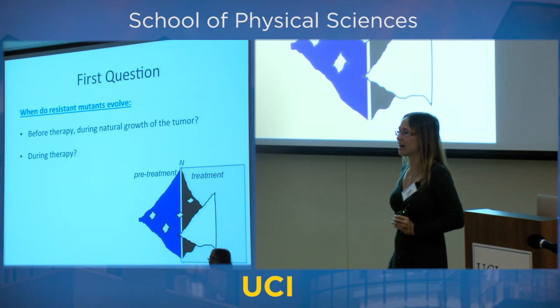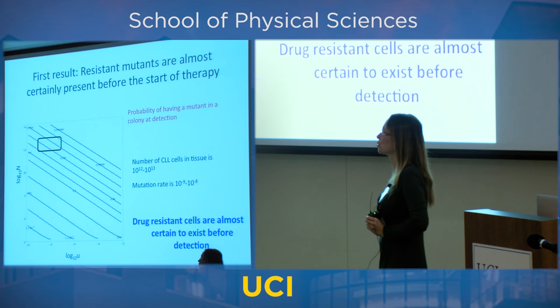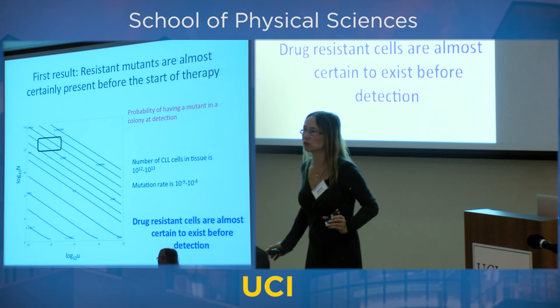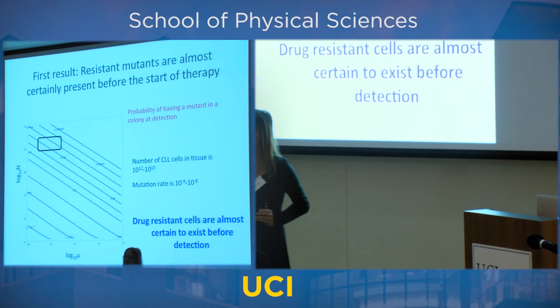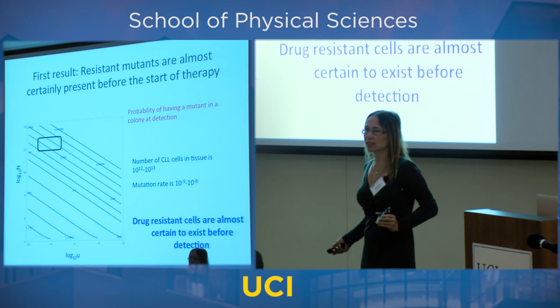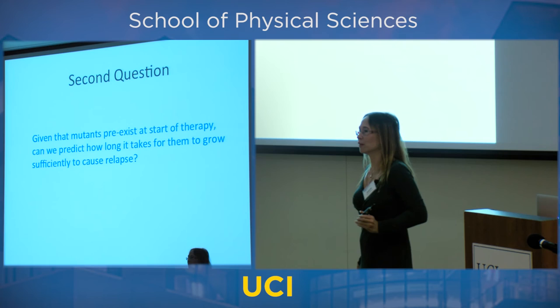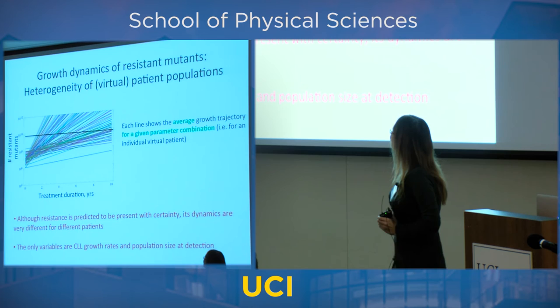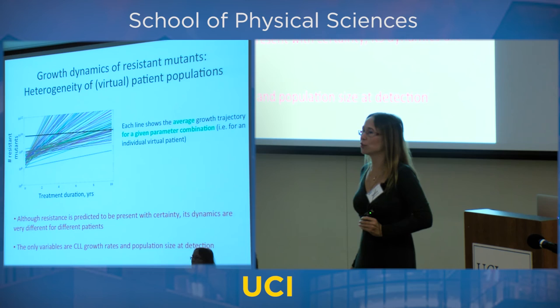The first question: do patients have resistant mutants in their cancer or not? It turns out that with certainty, anybody who comes to the doctor with CLL will have resistant mutations in their cancer. There is nothing you can do about it — treatment does not affect the probability of resistance being there. The question is how much resistance is there and what can we do to prevent it from progressing.